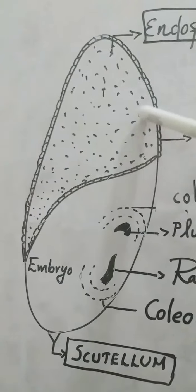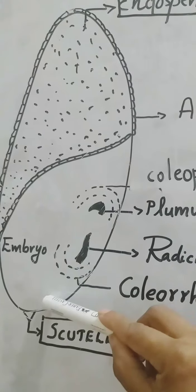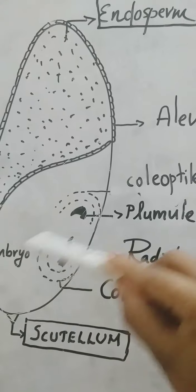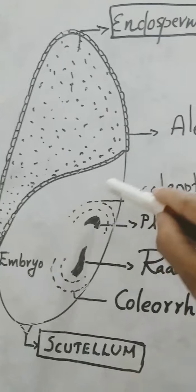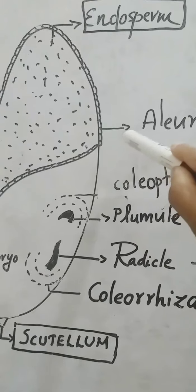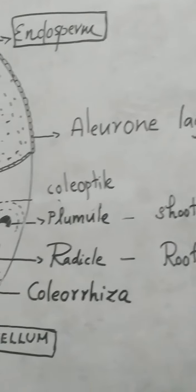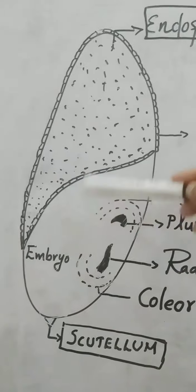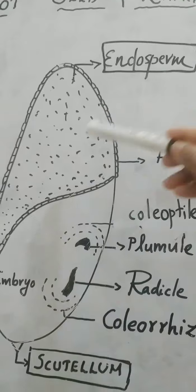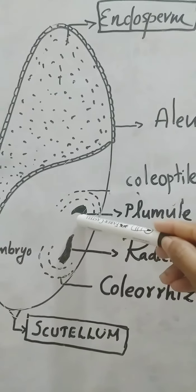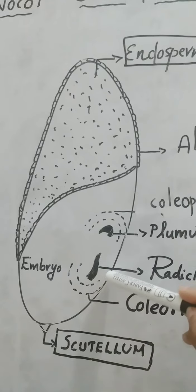So the two main parts of a monocot seed are: endosperm, shown as shaded, and scutellum, which contains the embryo. There is a partition wall between these two, and that wall is made up of protein. The name of that wall layer is known as the aleurone layer. So the aleurone layer is the partition wall between endosperm and scutellum.